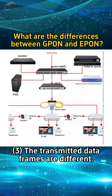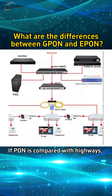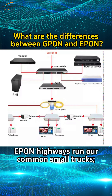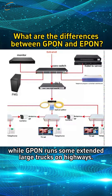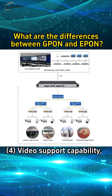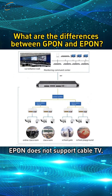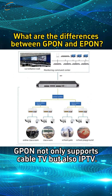Third, the transmitted data frames are different. If PON is compared with highways, EPON highways run common small trucks, while GPON runs extended large trucks on highways. Fourth, video support capability: EPON does not support cable TV, while GPON not only supports cable TV but also IP TV.